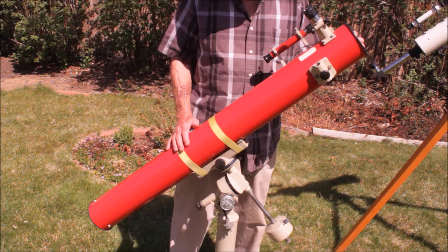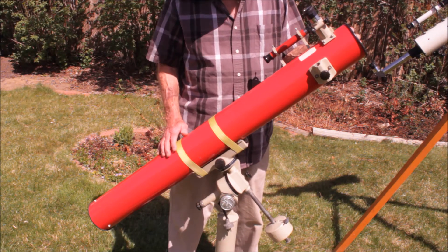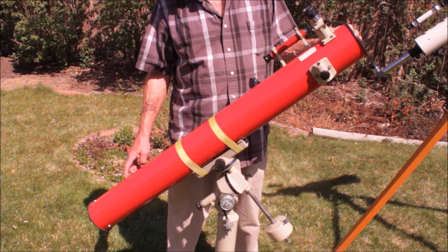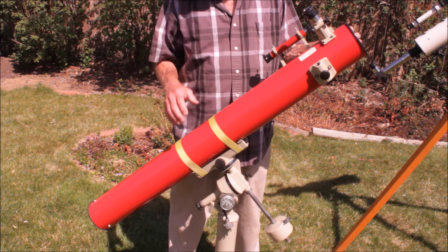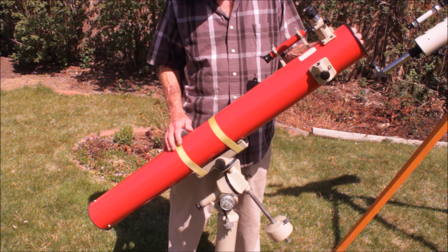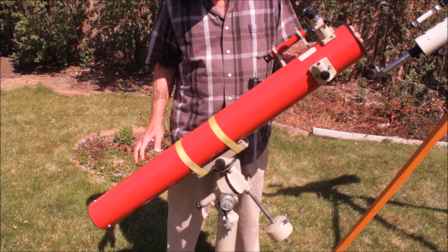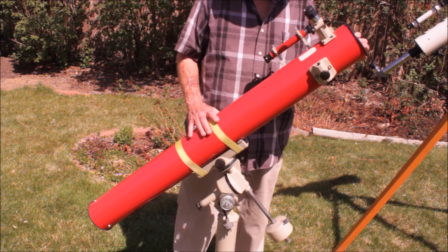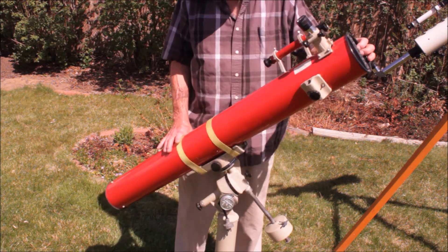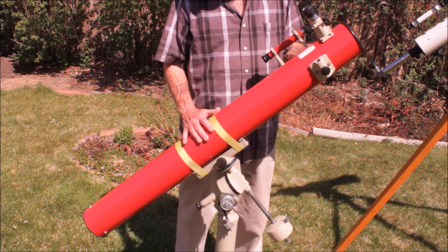This is an Edmund 4 and a quarter inch F-10. Apparently they did parabolize the F-10 mirror, although it's very close to being within the Rayleigh Limited F-10 for a sphere. So a sphere would have worked pretty well. It's a little bit better and they claim it was an eighth wave. It's a very nice telescope. The optics on this are very good. It performs quite well.